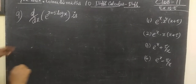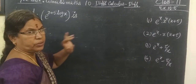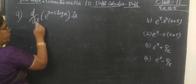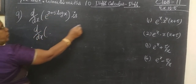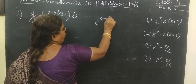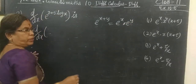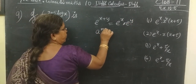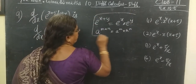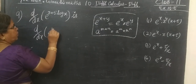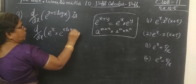Now question number 9. Find d/dx of e^(x plus π·log x). We need to find the correct option among the choices. We expand this: e^(x plus π·log x) equals e^x into e^(π·log x), using the rule a^(m+n) equals a^m into a^n.